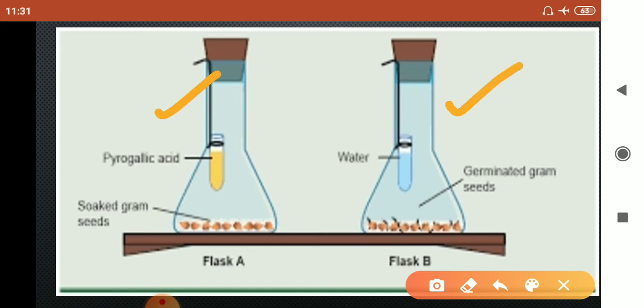In both flasks we have taken wet cotton wool. Now, wet cotton wool means wool soaked in water. Why? Because this water will be supplied to the seeds. Then in both flasks we will...